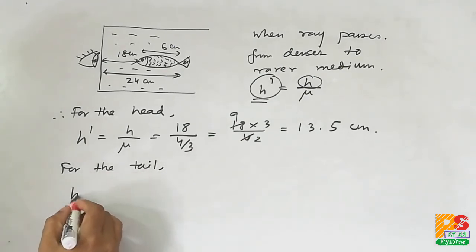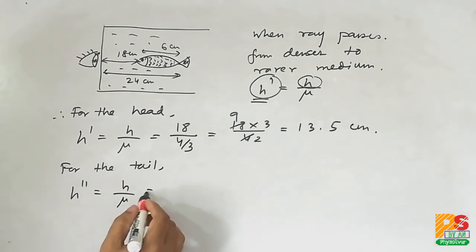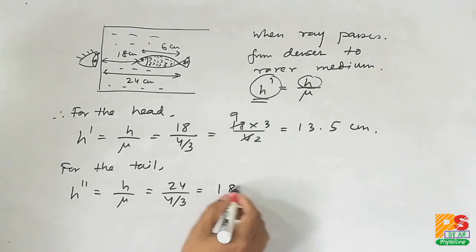Similarly, for the tail, real depth is 18 plus 6, 24 centimeters, and μ is 4/3. Putting the values, it is 18 centimeters.